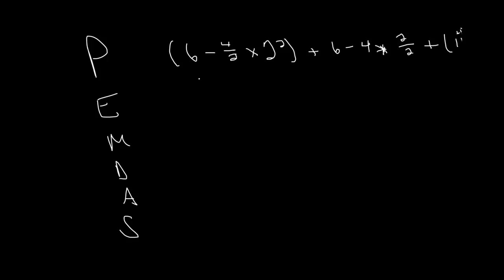First things first, we do the parentheses. We can't do much with the first one right now, but this is a good time to show that inside each parenthesis, PEMDAS repeats itself. Parentheses are little blocks that take priority. So inside 6 minus 4 halves times 2 squared, you might be confused as to what goes first — we basically just repeat PEMDAS again. PEMDAS will always repeat; you can have parentheses inside parentheses forever and you always do PEMDAS. So first in PEMDAS is exponents: 2 squared becomes 4, so now we have 6 minus 4 halves times 4.